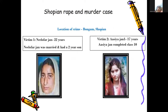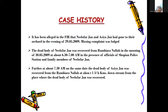In the Sofian rape and murder case, the victims were Niloufar Jain, 22 years, and Aisha Jain, 17 years. It was alleged that they had gone to their orchard in the evening of 29th May 2009, and a missing complaint was filed. The dead body of Niloufar Jain was recovered near Ram Bahiran Nala at about 6:30 to 7 a.m. The dead body of Aisha Jain was recovered from Ram Bahiran Nala at about 1.5 kilometers downstream.